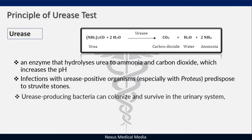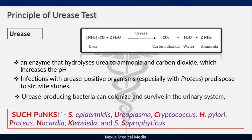Urease-producing bacteria can colonize and survive in the urinary system. To remember organisms that produce urease, you use the mnemonic SUCH PANGS.